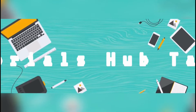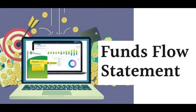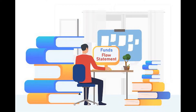Fund Flow Statement in Tally Prime. You can view the Funds Flow Statement in Tally Prime that tracks the movement of funds during an accounting period. It is represented in terms of the sources of funds and the application of funds. You can view this report in the browser. The difference between the sources and application of funds shows the net change in the working capital during the period. The Funds Flow Statement displays those transactions that affect the net working capital of the company.